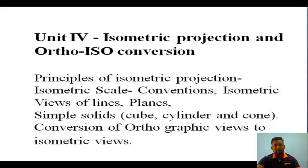Topic in Unit 4 is conversion of orthographic views to isometric views, where we will be given two or three views — front view, top view, and side view — and we have to convert that into a single view. In Unit 5 we were given a single isometric view and converted it into multiple views. Here in Unit 4 we do the reverse: we merge three figures into a single isometric view. That conversion is what we call orthographic to isometric conversion.